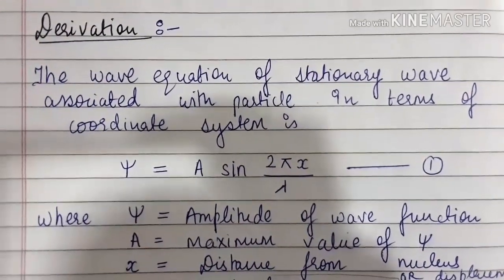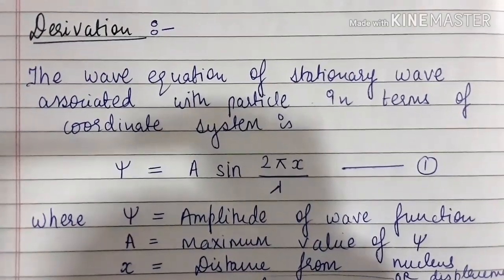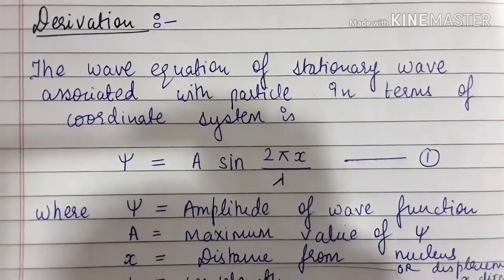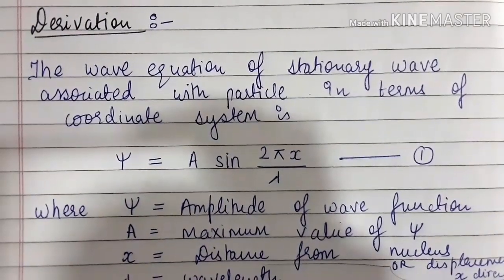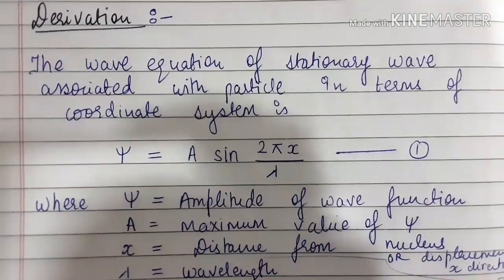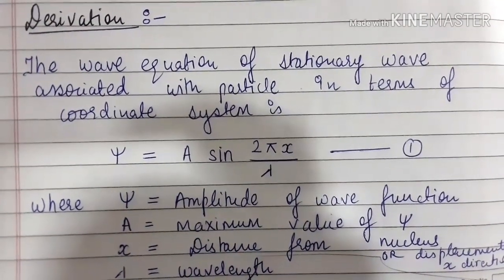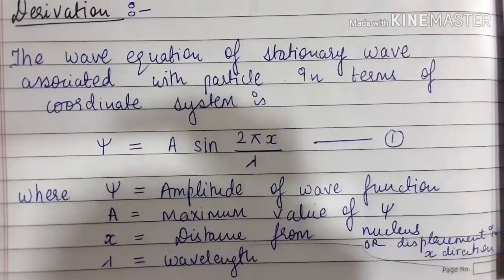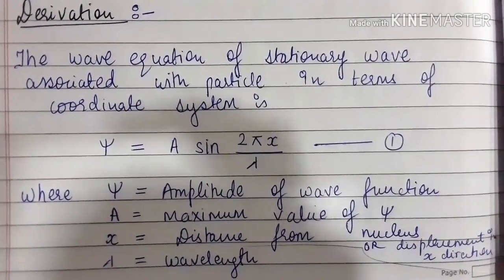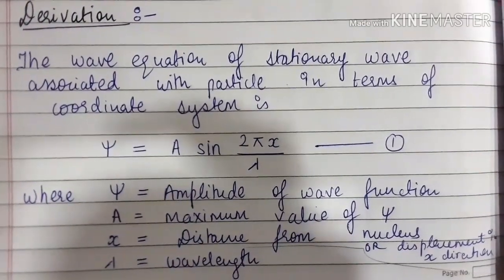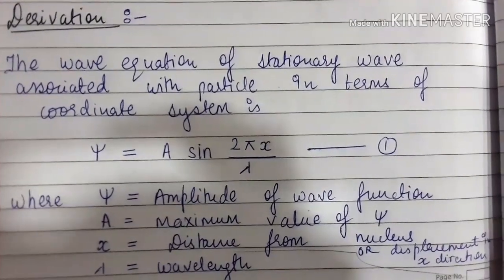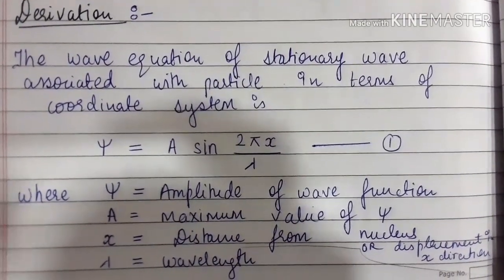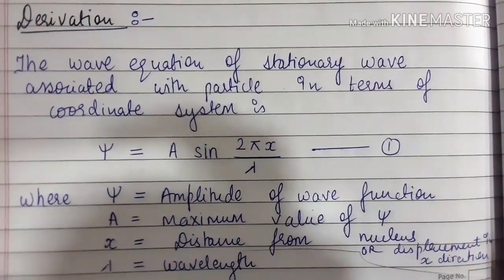Let's start the derivation with the wave equation of a stationary wave associated with particles. In terms of a coordinate system, it is given as psi equal to A sine of 2 pi x upon lambda. This is the wave equation for a stationary wave with a particle, where psi is the amplitude of the wave function, A is the maximum value of psi, x is the displacement in the x direction, and lambda is the wavelength. We take this as equation number 1.